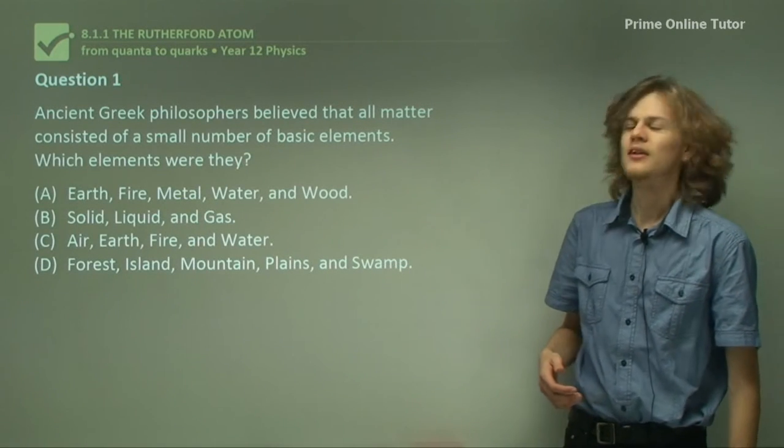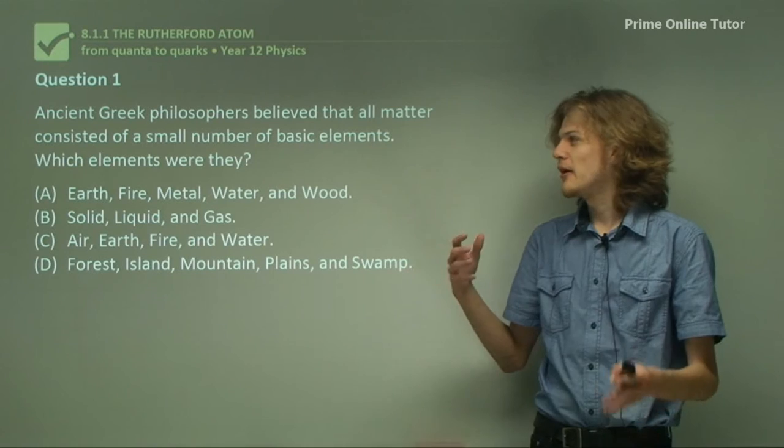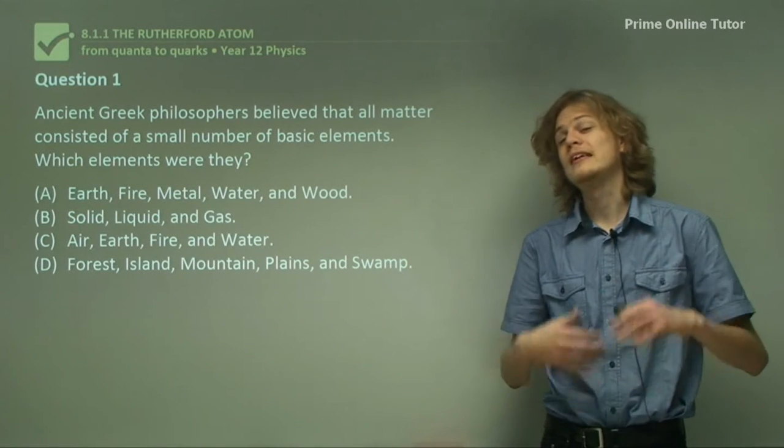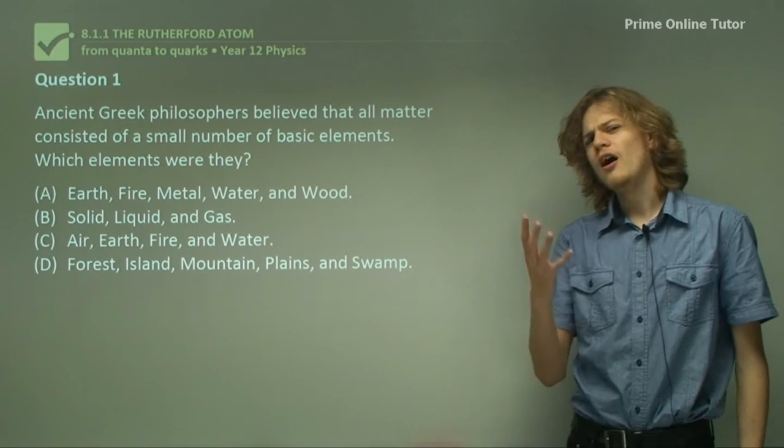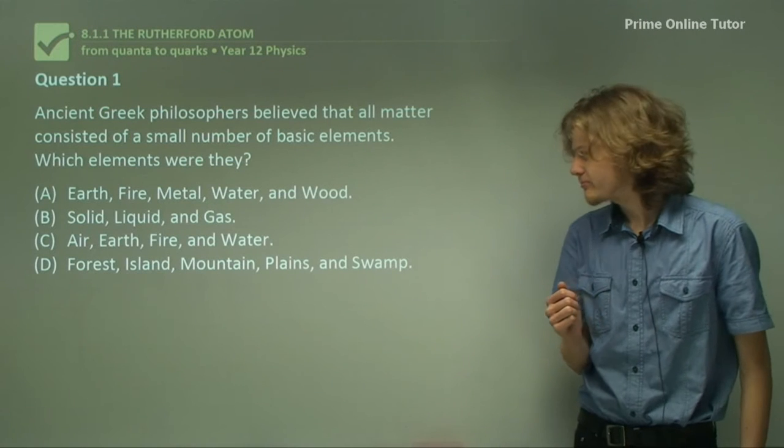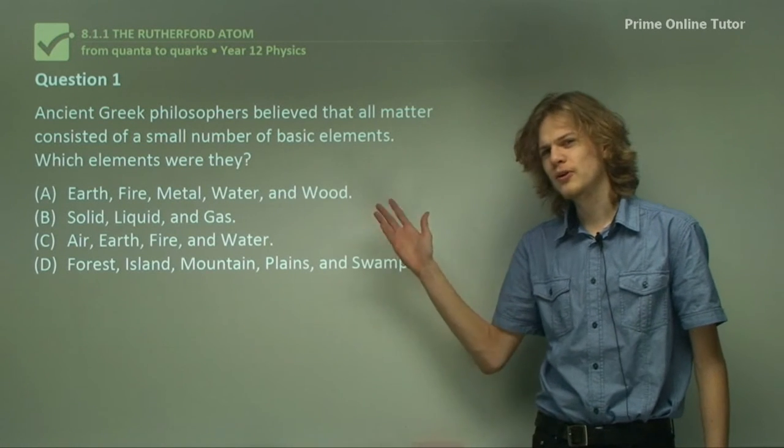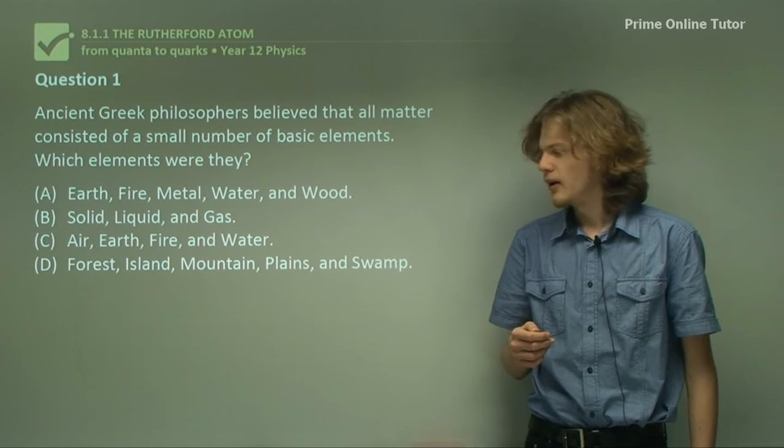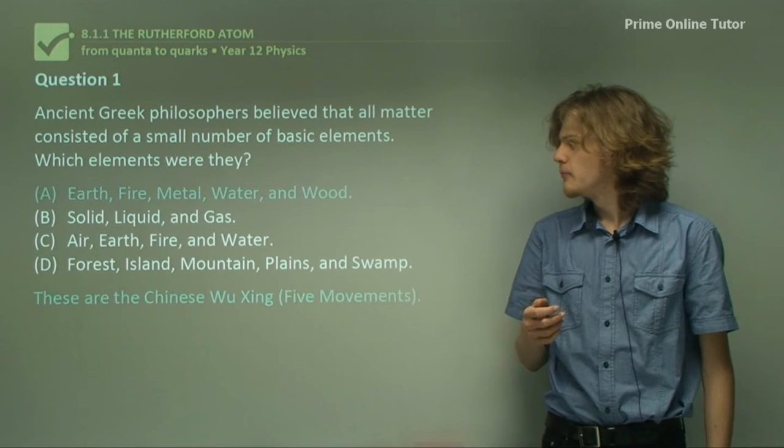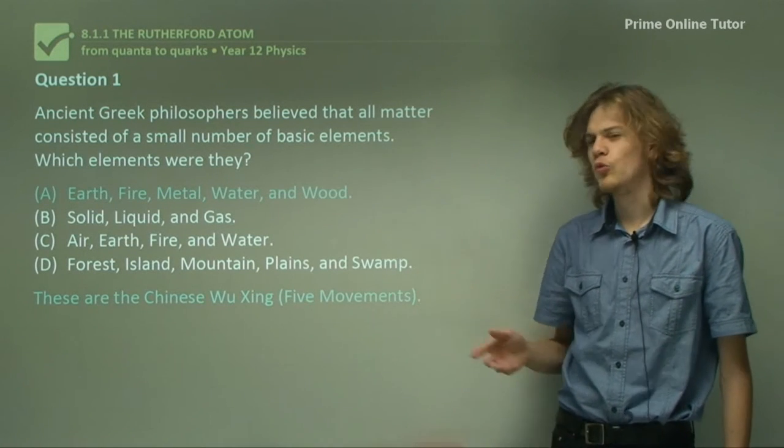Question one. Ancient Greek philosophers believe that all matter consists of a small number of elements called the classical elements. What are these four elements? We have a few options here and some of them are pretty familiar. So let's go through them. Part A: Earth, fire, metal, water, and wood.